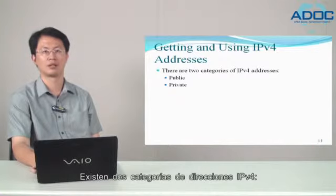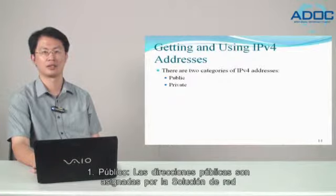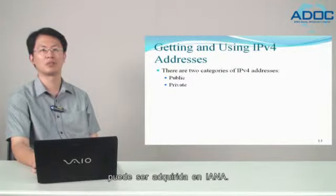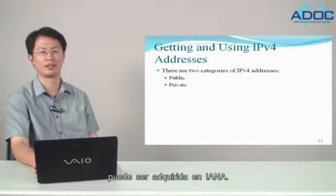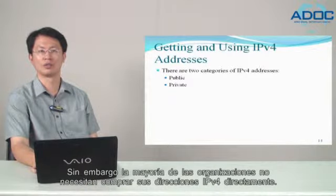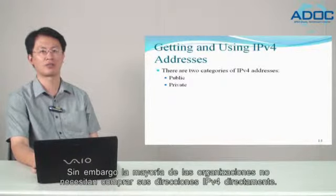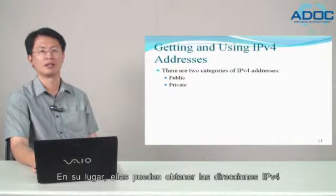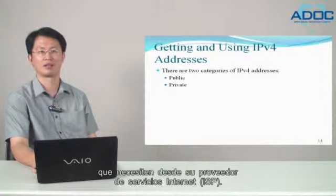There are two categories of IPv4 addresses. First, public. Public addresses are assigned by Network Solutions — formerly InterNIC — and can be purchased from IANA. Most organizations don't need to purchase their IPv4 addresses directly; instead they get IPv4 addresses from their Internet Service Provider, ISP.